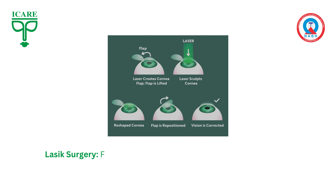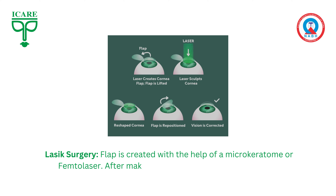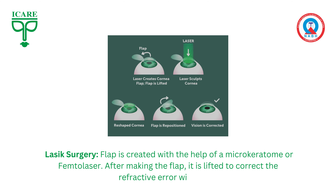First, we will talk about LASIK surgery. In LASIK surgery, basically, we make a flap with the help of a microkeratome and by the femtolaser. After making a flap, we lift the flap and then we apply laser to correct the refractive error.